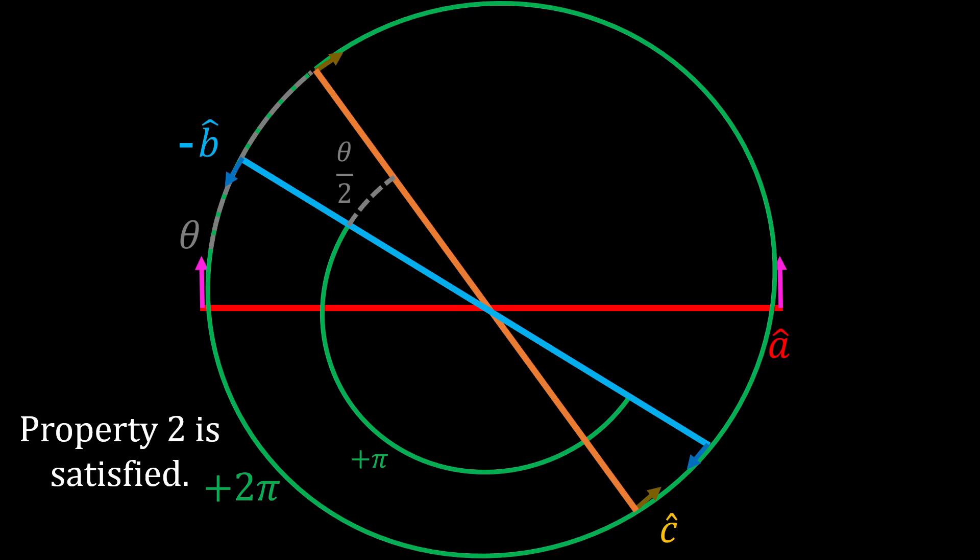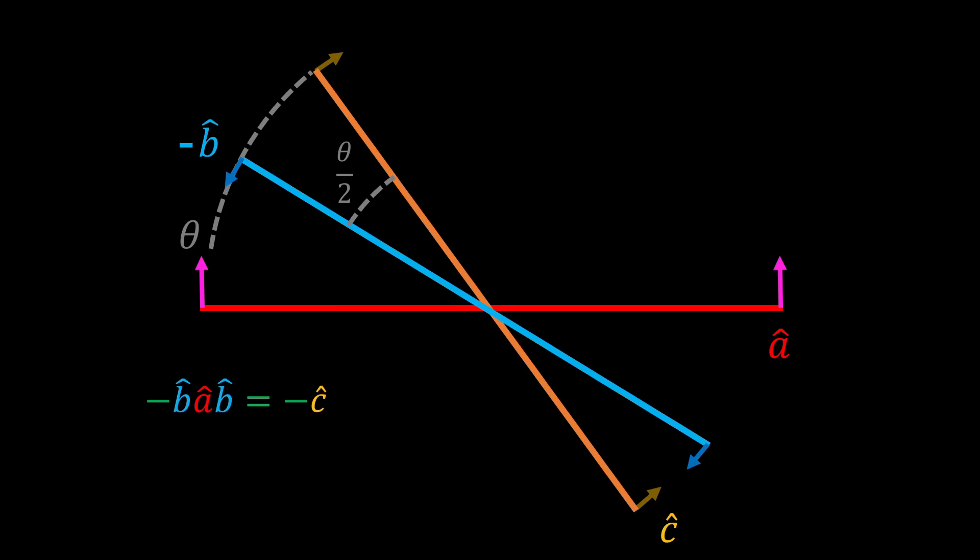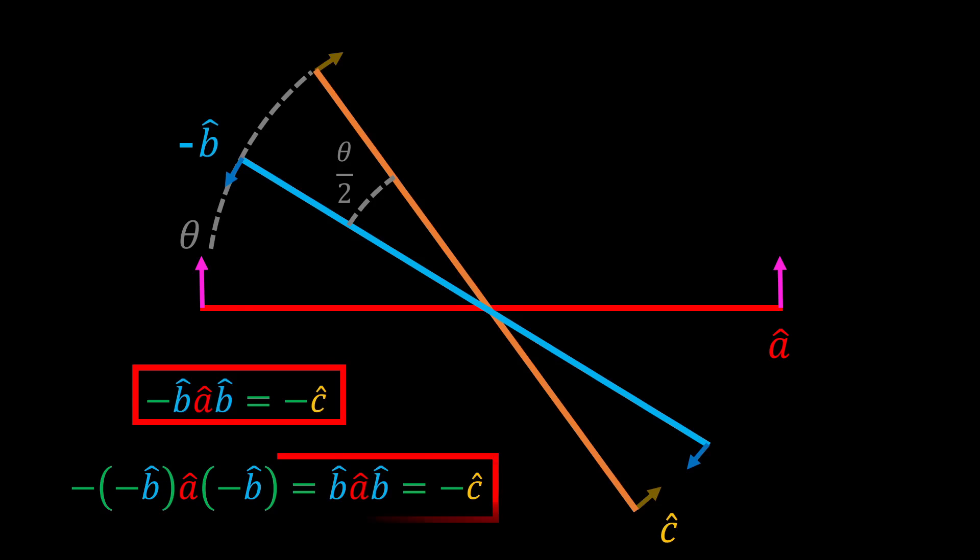But what about the first property, that both a spinner and its negative describe the same physical situation? This is easy to check. We know that reflecting A in B gives negative C, so what about reflecting A in negative B? It also gives negative C, so the physical situation is the same, so both properties are satisfied. And angle bisectors in the APS can be thought of as Pauli spinners.